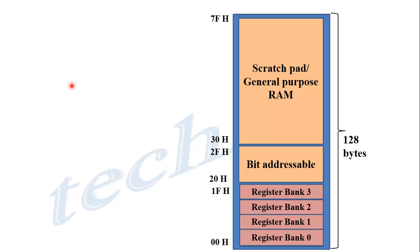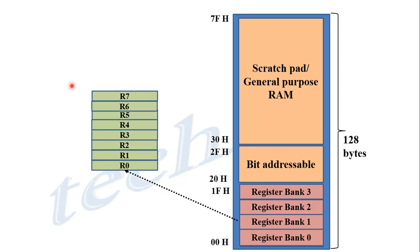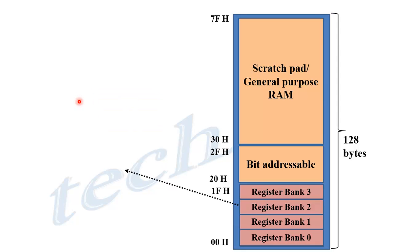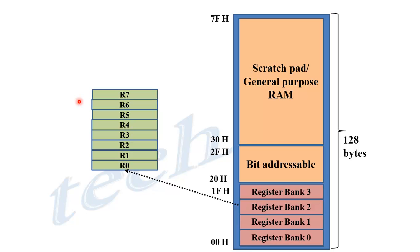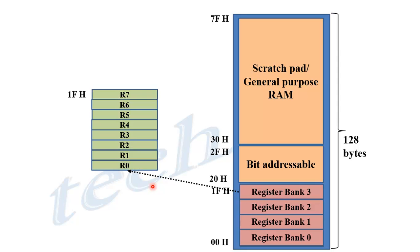Similar to register bank 0, register bank 1 has eight registers, R0 to R7. These registers occupy the next memory locations after bank 0, having address starting from 08H to 0FH. Register bank 2 has registers R0 to R7, occupying addresses 10H to 17H. Register bank 3 has registers R0 to R7 with addresses 18H to 1FH.